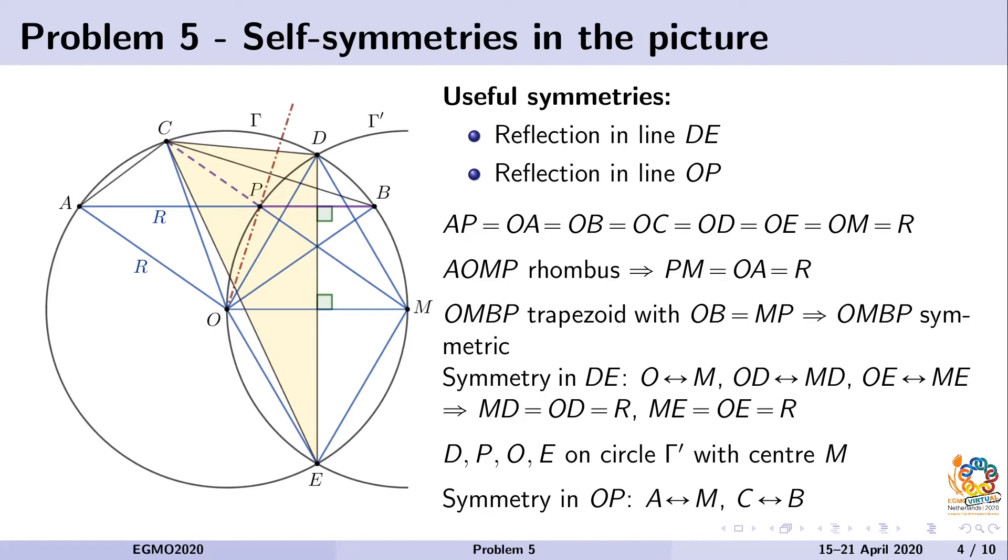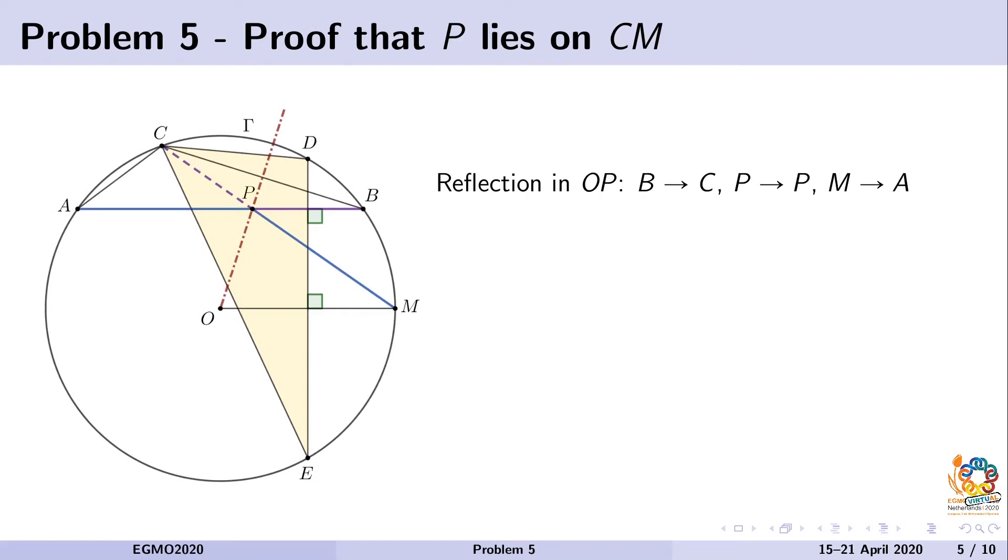so OP as its diagonal will be a symmetry line for points A and M. Also, we remember that OC equals OB, so OP will also be the perpendicular bisector to points B and C. And by symmetry, if we take points A, P, B which lie on the same line, then P lies on the bisector CM, which was the second part of the proof.